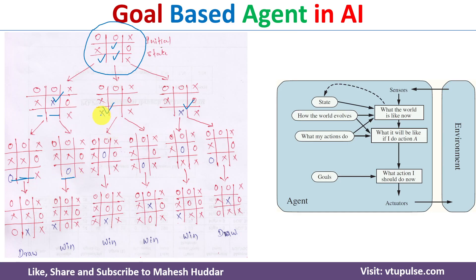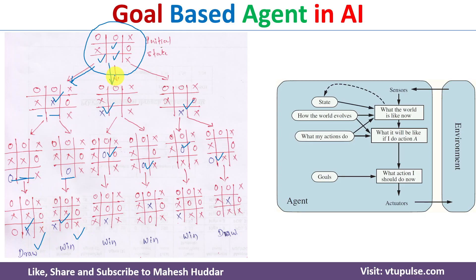If the agent played in the second position, there are again two possibilities for the human. If the agent played in the third position, the human has two possibilities as well. There is then only one possibility for the agent. Once we have all the leaf nodes, we examine which path leads the AI agent to win the most. Following one path, the AI agent wins once and draws once; following another path, the AI agent wins both times; following the third path, it wins once and draws once.